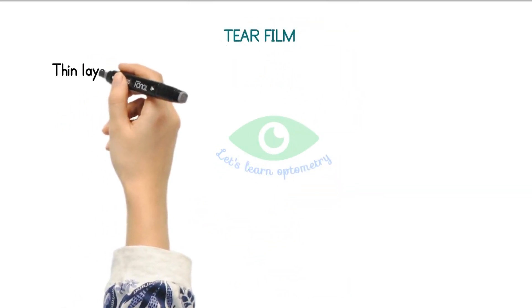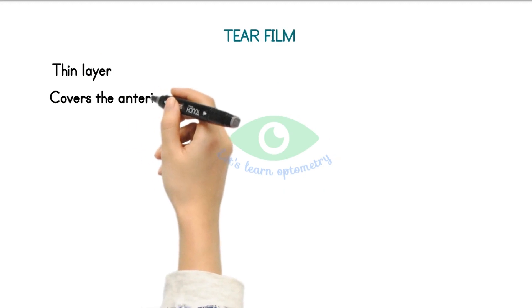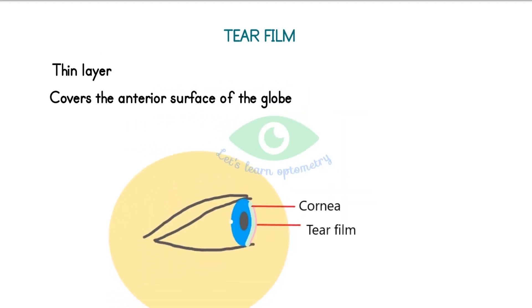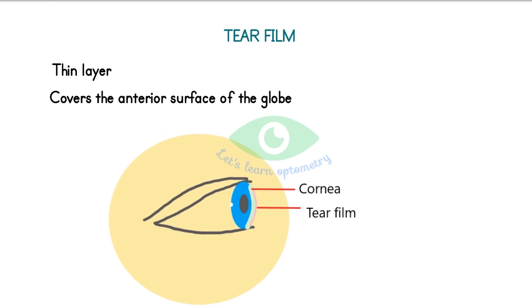Tear film is a thin layer which covers the anterior surface of the globe. In this picture, the cross-section of cornea is shown in light blue and the tear film is shown in pink.